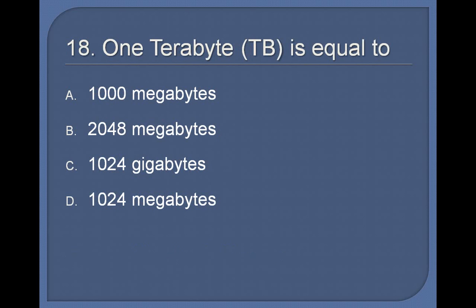18. 1 terabyte TB is equal to: 1000 megabytes, 2048 megabytes, 1024 gigabytes, 1024 megabytes. Answer: 1024 gigabytes.